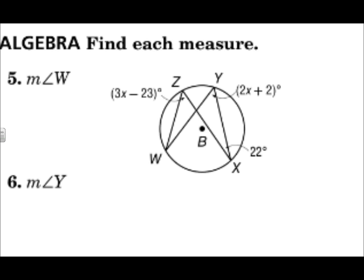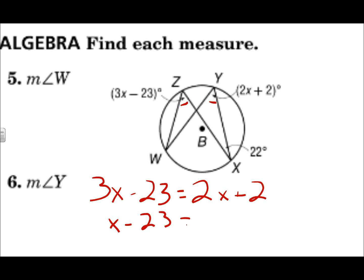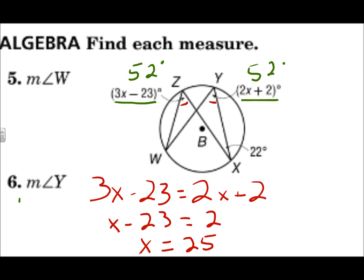For question 6, set up the equation. Since these two angle measures are congruent, 3x minus 23 equals 2x plus 2. Subtract 2x from both sides, then add 23 to both sides: x is 25. If x is 25, then 3 times 25 minus 23 is 52 degrees for angle Z, and 2 times 25 plus 2 is also 52 degrees for angle Y. The measure of angle Y is 52 degrees.